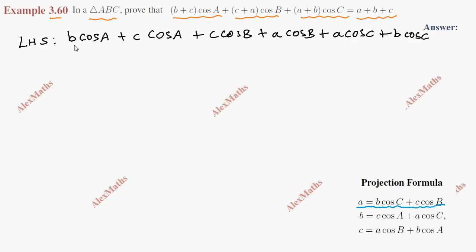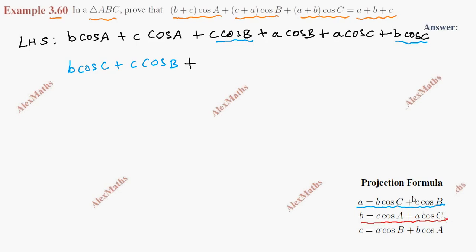Now we will do grouping. First group: B cos C plus C cos B. Second group: C cos A plus A cos C.